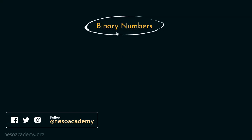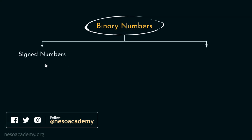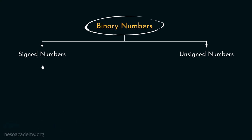Binary numbers can be broadly classified into two categories: the signed binary numbers and the unsigned binary numbers. During the previous sessions, we have briefly observed unsigned numbers while studying about the subtractions and diminished radix and radix complements.